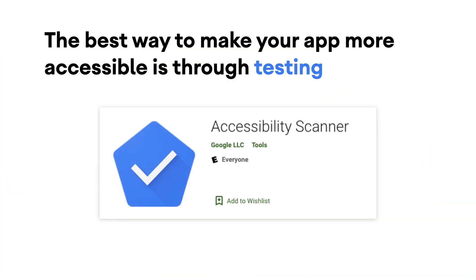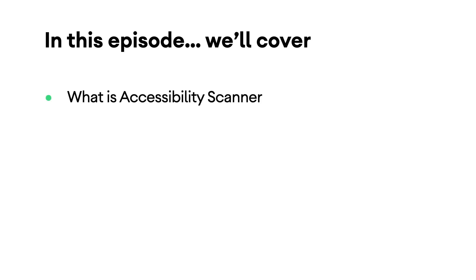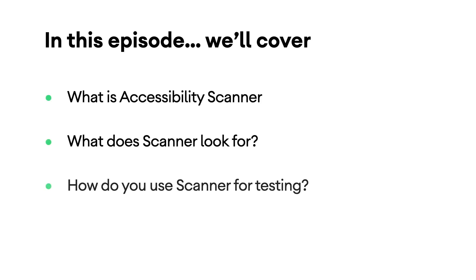The best way to make your app more accessible is through testing, and Accessibility Scanner is one of the tools that can help with your testing flow. In this episode, we'll talk about what Scanner is, what it looks for, and how to use it for testing your own apps.